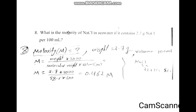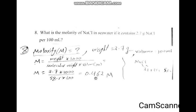Number 8: what is the molarity of NaCl where the weight equals 2.7 grams and the volume is 100 ml? The weight is 2.7 and the volume is 100 ml — find the molarity. We will use the formula: molarity equals weight multiplied by 1000 divided by molecular weight multiplied by volume. The molecular weight of NaCl equals 58.5. Calculating directly, molarity equals 0.462 mol.